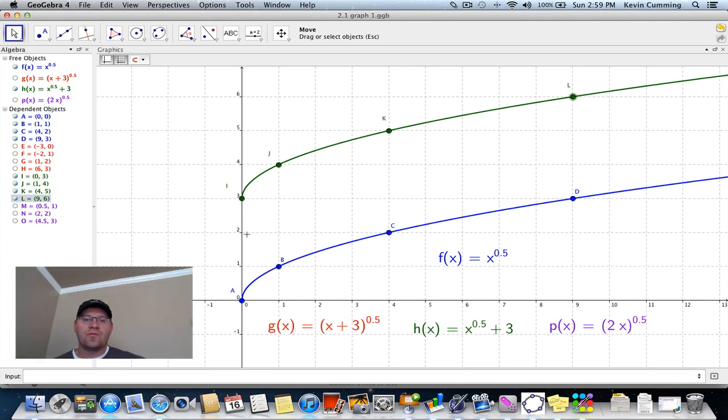Point A has been moved 3 units up, Point B has been moved 3 units up, Point C has been moved 3 units up, and Point D also moved 3 units up. So again, when we add a constant onto the end of our function, there's a vertical shift or vertical translation of 3 units.